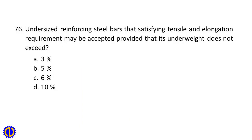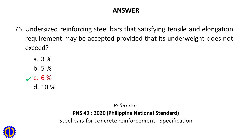Question 76. Undersized reinforcing steel bars that satisfy tensile and elongation requirements may be accepted provided that its underweight does not exceed: A. 3%, B. 5%, C. 6%, D. 10%. Answer: C. 6%. Reference: PNS 49:2020, Steel Bars for Concrete Reinforcement Specification.